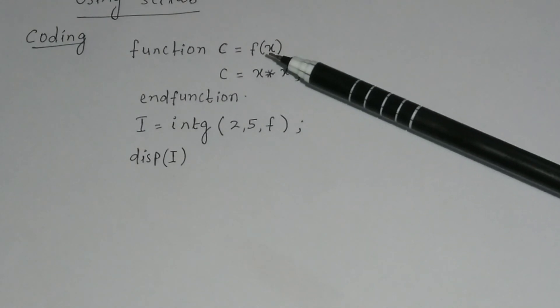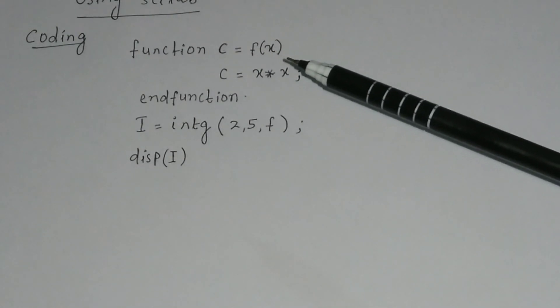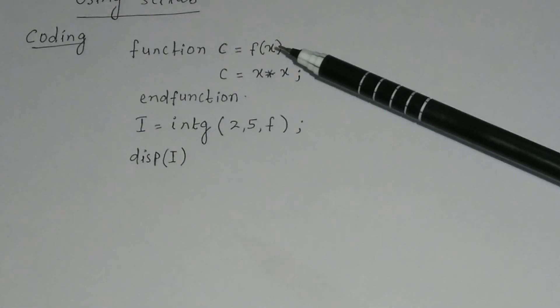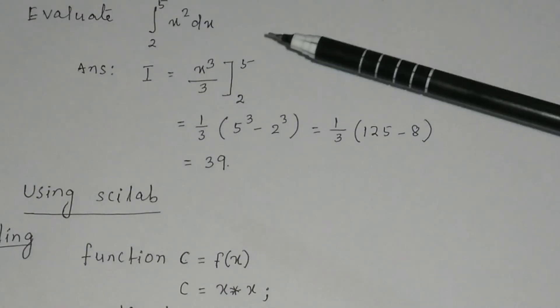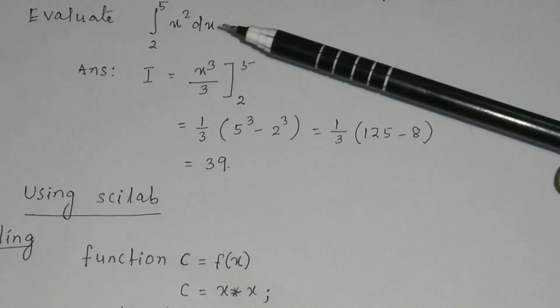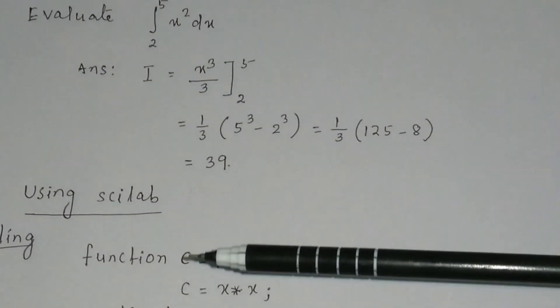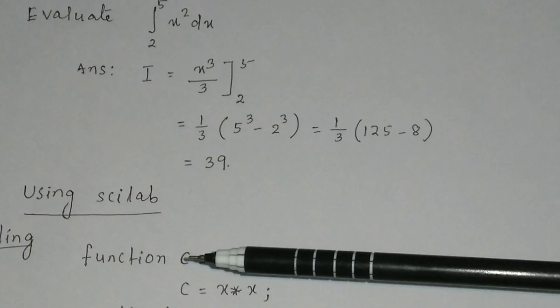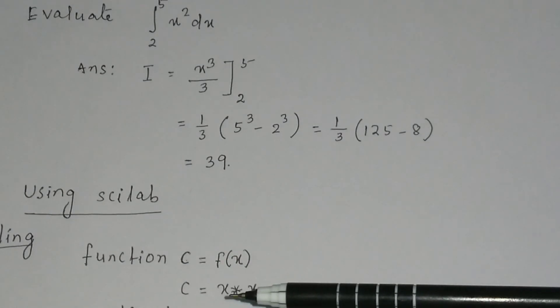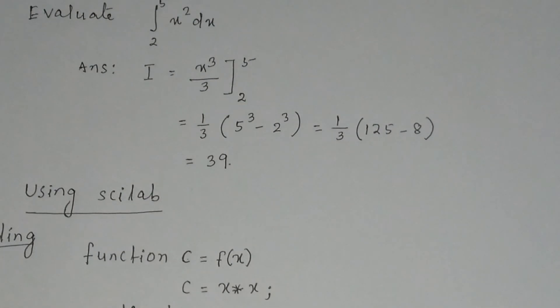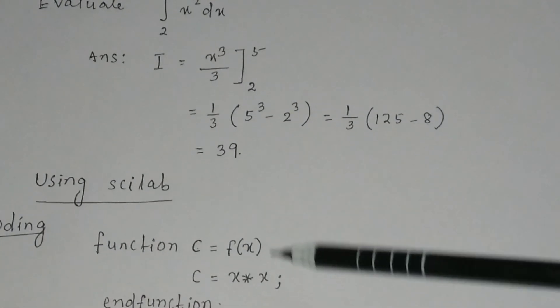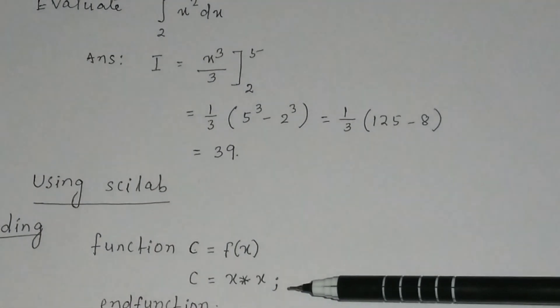And in the argument or in the input variable, you write the variable x. And it is given to find out the integration of x square dx. So you write the output variable c that is equal to x multiplied by x. Then you have to give the semicolon for line break.